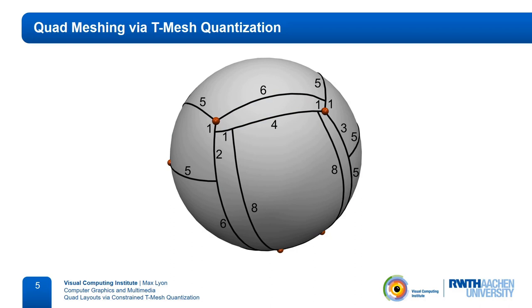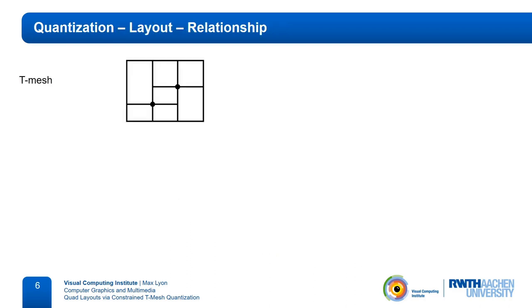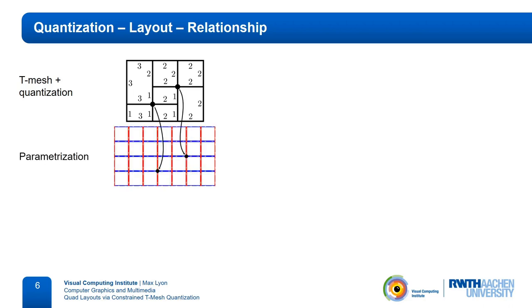So first, let us take a closer look at how the quantization of the t-mesh influences the layout of the resulting quad mesh. The quantization of the arcs provides constraints on where the layout vertices have to lie in a parameterization. Setting the bottom left corner to the origin, for example, then fixes the position of all layout vertices. Parametrizing the layout vertices on these integer positions yields an integer grid map.